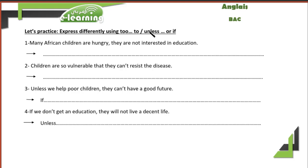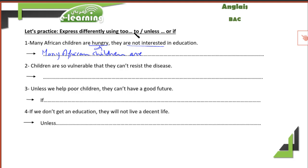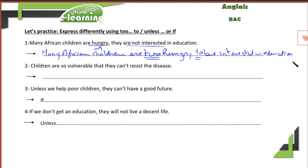Let's practice. Express differently using 'too...to' or 'unless/if.' First one: 'Many African children are hungry; they are not interested in education.' We have 'hungry' as an adjective and 'not interested' as a negative verb. Using the structure too + adjective + to + verb: 'Many African children are too hungry to be interested in education.' We omit the 'not.' This expresses inability.